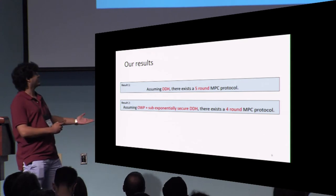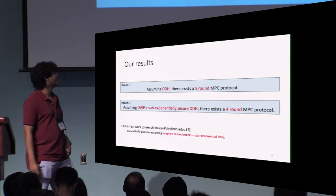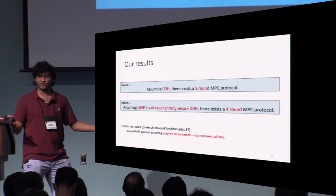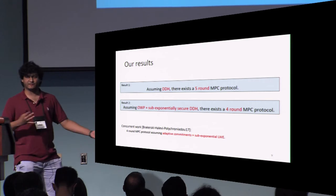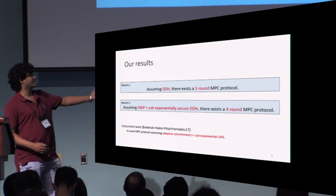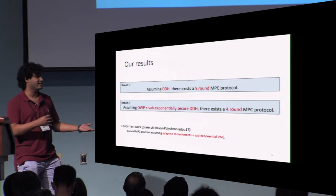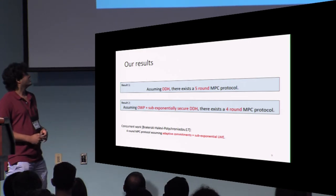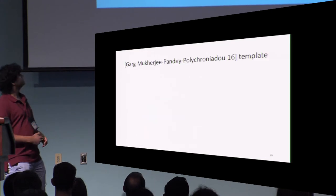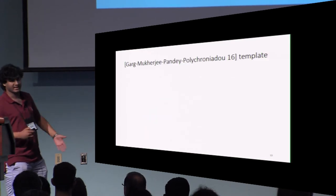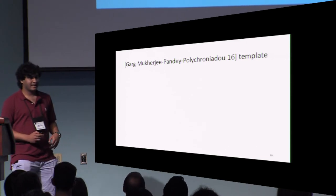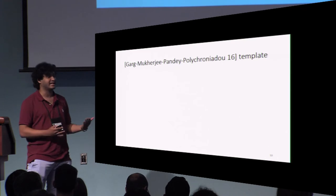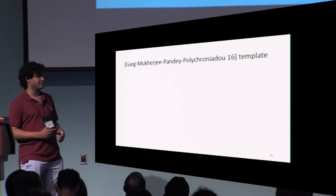We should point out that there is a concurrent work by Brakerski, Halevi, and Polychroniadou, and they construct a four-round protocol as well. They use slightly different techniques and their assumptions are different — they assume adaptive commitments and sub-exponential LWE.